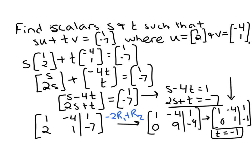So row 1 says that s minus 4 times t, which I know now is negative 1, equals 1. So s plus 4 equals 1, which implies that s equals negative 3.